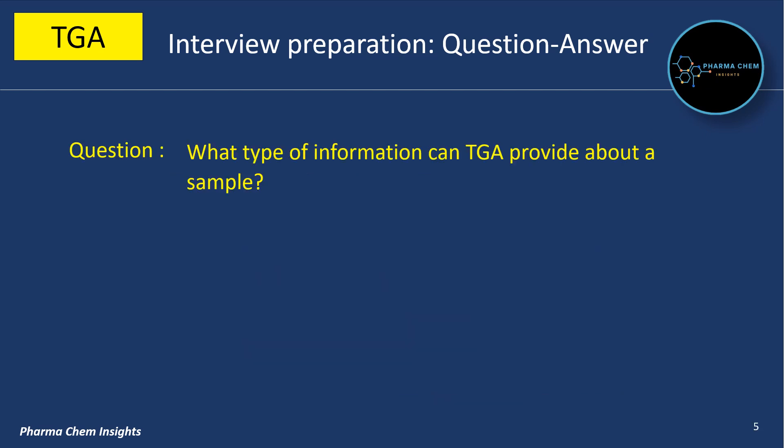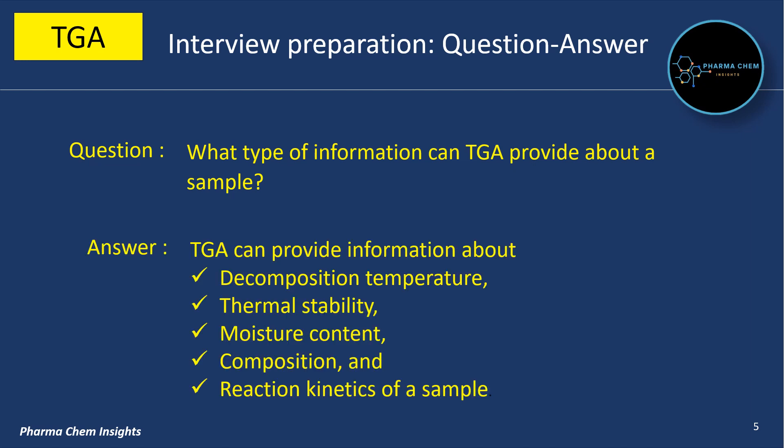What type of information can TGA provide about a sample? TGA can provide information about decomposition temperature, thermal stability, moisture content, composition, and reaction kinetics of a sample.